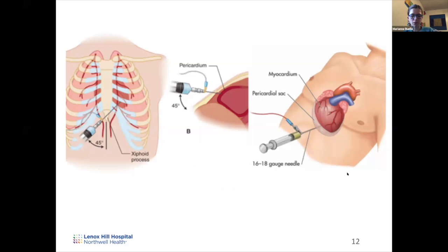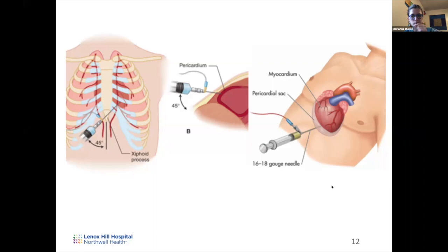A question about congestive heart failure — that's a separate topic we can't cover today, but YouTube videos are a good resource. Regarding where to insert the needle for pericardiocentesis, there's the parasternal approach — inserting in the fifth intercostal space near the sternum — and the sub-xiphoid approach, inserting inferior to the xiphoid process.